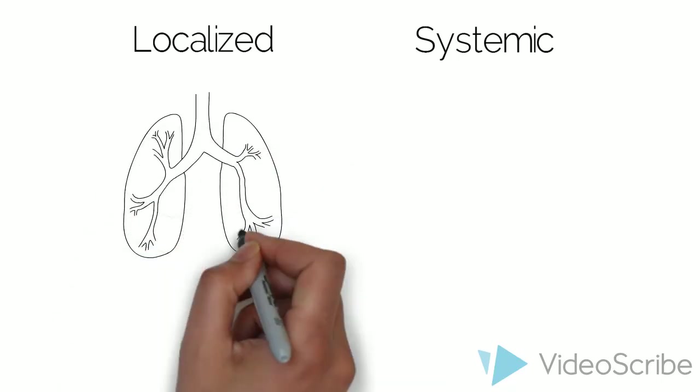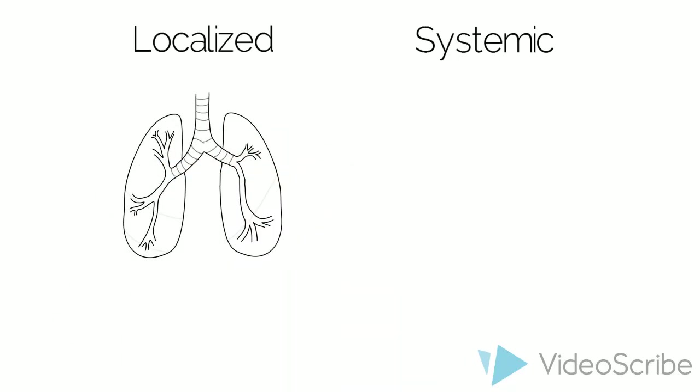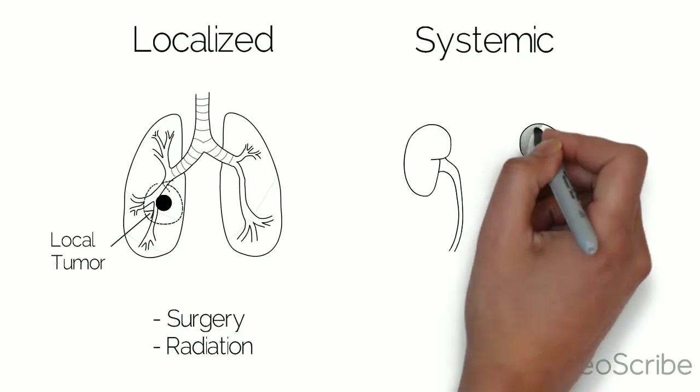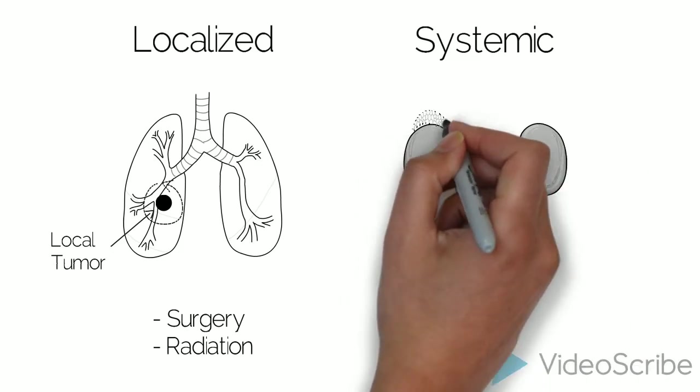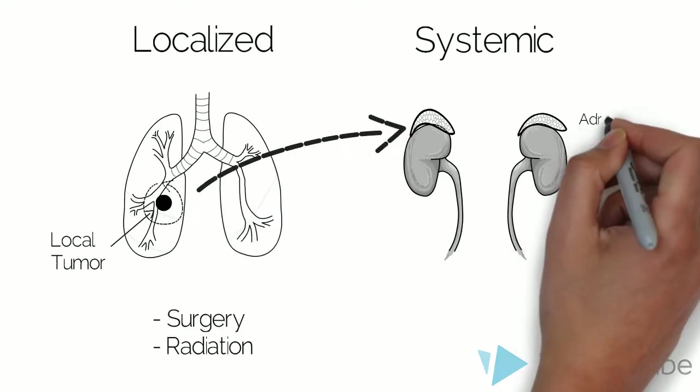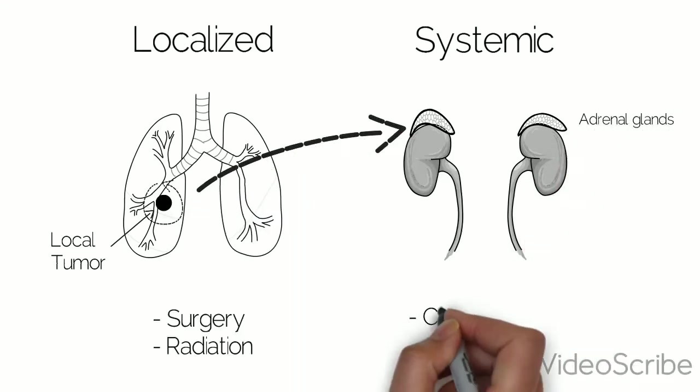To review, localized tumors can be treated curatively. For many localized tumors, treatment will involve surgery or radiation. Tumors that have spread systemically more often require treatments that address multiple areas. For many of these tumors, we use chemotherapy.